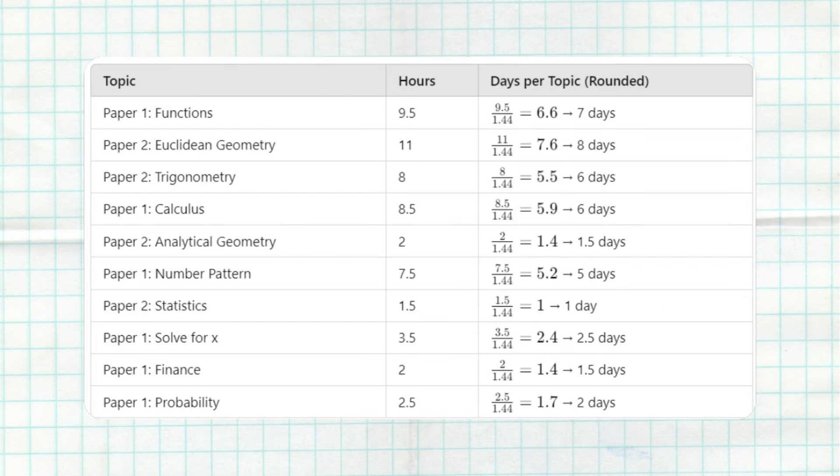And when we apply it, you're going to take, for example, functions from the table. We see the fact that the total hours for function is 9.5. So you're going to say 9.5 divided by the number of hours per day, which in our case is 1.44. And we see the fact that the total days that we need to spend for functions will be 6.6, which when you round it off is 7 days. So that's how you would calculate the number of days that you need to spend per topic.